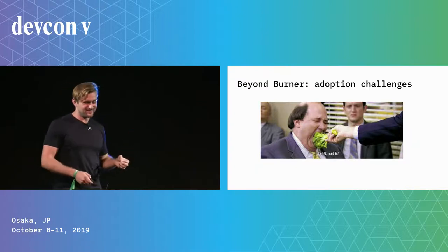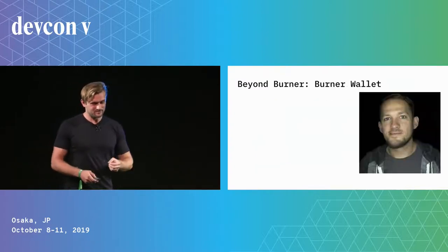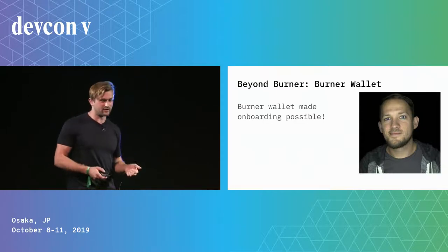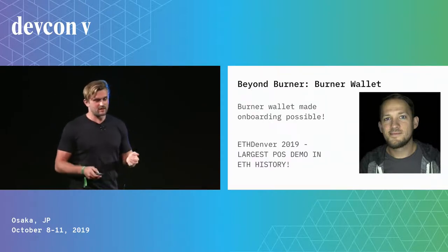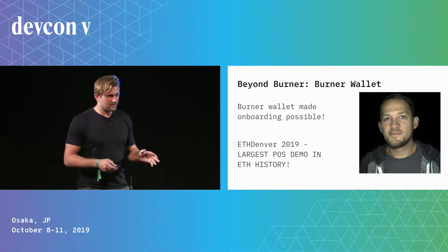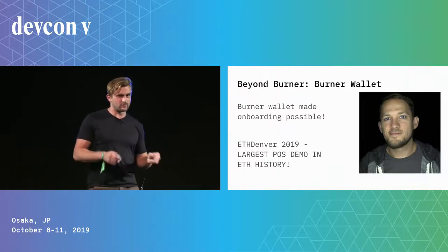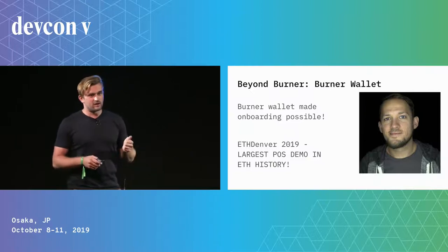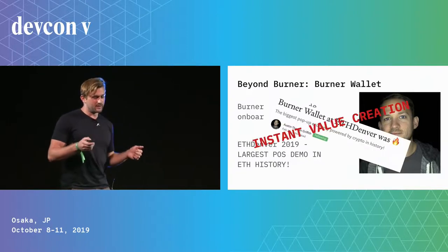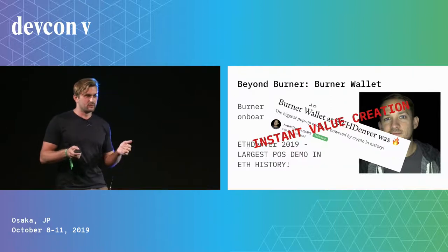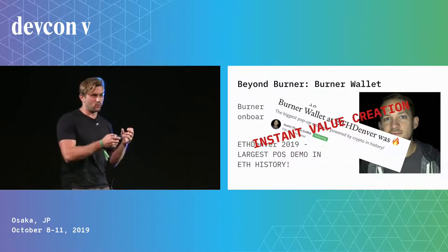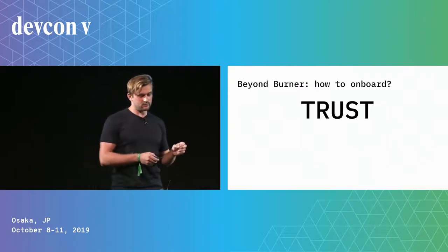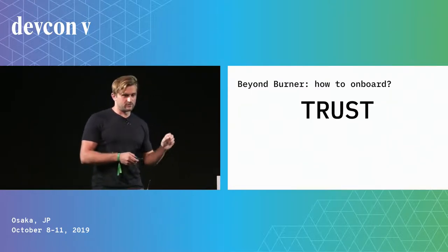We can't shove decentralization down people's throats — it's not useful. The first real iteration of this was the burner wallet with Austin Griffith. He made onboarding a thing at ETH Denver in 2019 — the largest point-of-sale system spun up in the Ethereum ecosystem since inception. It created instant value for people on the ground wanting to use that network.